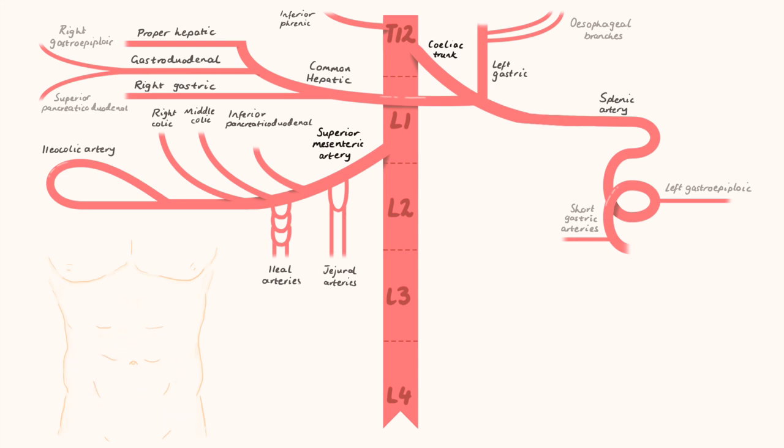Next up, L2. From L2, we have two major arteries branching straight from the aorta. First up, the renal arteries, which has the inferior suprarenal coming off it. The superior suprarenal comes off the inferior phrenic, just so you know.